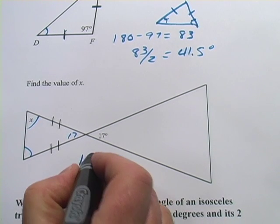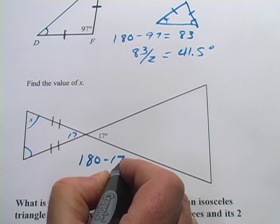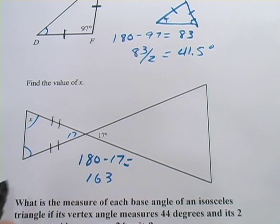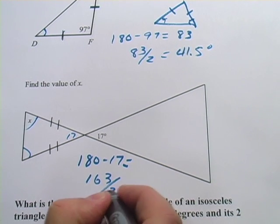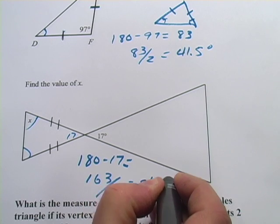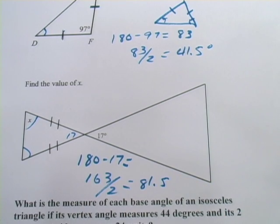Which would be 163. And then we've got to split that up between the two base angles. So we just divide that by 2. And that is 81.5.